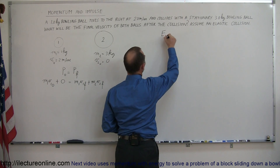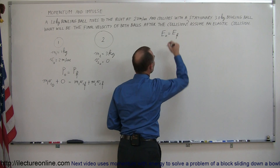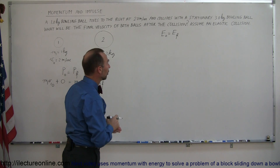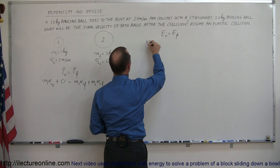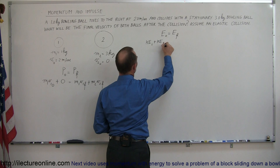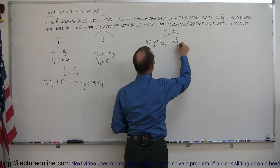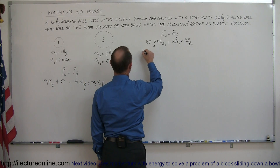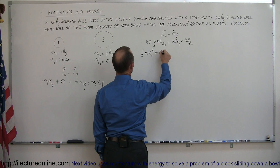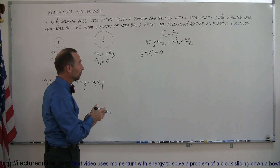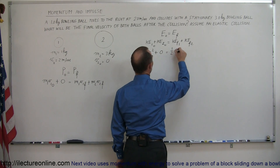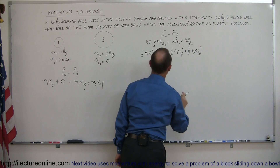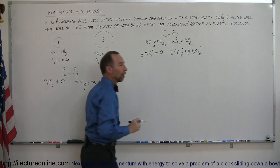We also know that energy is conserved, and that provides our second equation. We say E initial equals E final, and the only energy we're dealing with is kinetic energy — not potential energy, because the height isn't changing. So the kinetic energy of the first ball plus zero equals one-half m1·v1 final squared plus one-half m2·v2 final squared. The kinetic energy of the first ball must equal the sum of the kinetic energies of the two balls after the collision.